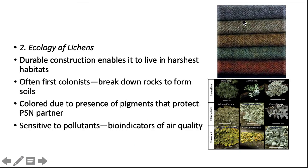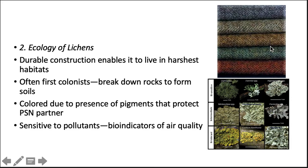Lichens can live in some of the harshest climates in the world and are often the first colonists — the first organisms to break down rocks to form soils. In primary succession (like after a volcano erupts and lava cools leaving bare rock), lichens come in, break down rock to form soil, allowing other plants and eventually larger animals to colonize. Lichens are colored due to pigments that protect their photosynthetic partners, and they are very sensitive to pollutants — making them excellent bioindicators of air quality. Some species are nitrogen-sensitive, others are tolerant of high nitrogen levels. The same pigments extracted from lichen are used as natural dyes — for example in Scotland's famous Harris Tweed.